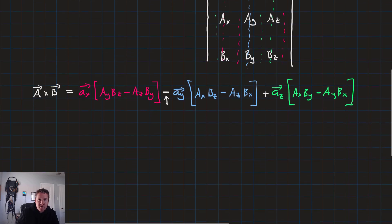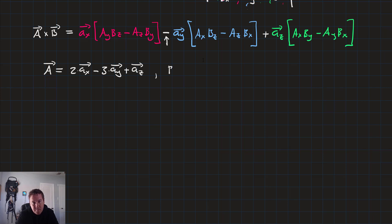Let's go ahead and work out an example. Let's say that we're given a vector a is equal to 2 times a sub x minus 3 times a sub y plus a sub z. And b is equal to minus 4 times a sub x minus 2 times a sub y plus 5 times a sub z. And we'll go ahead and use this formula that we've got up here at the top.